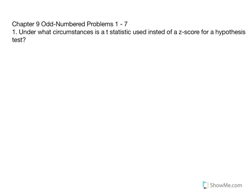Under what circumstances is a t-statistic used instead of a z-score for a hypothesis test? Chapter 8 was a z-score test, our first hypothesis test. In the z-test, we were required to know the population parameters, which included the population mean and the population standard deviation. In other words, we were comparing a population to a sample.